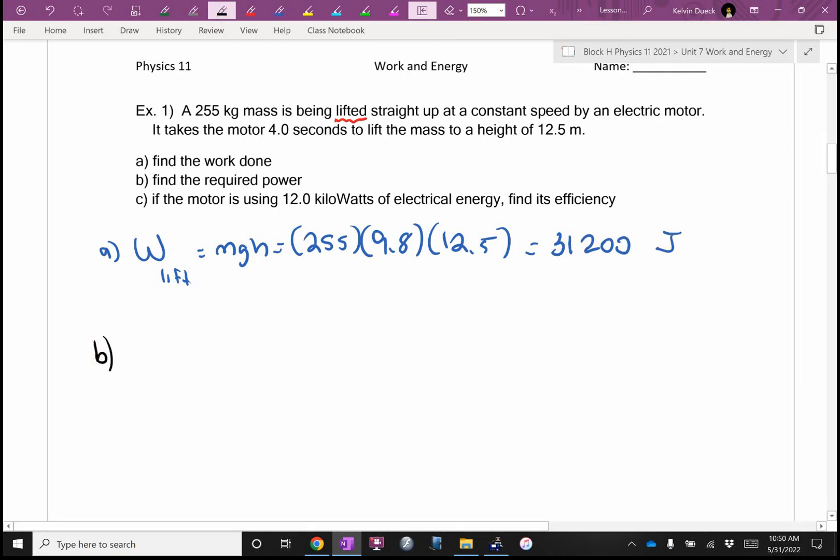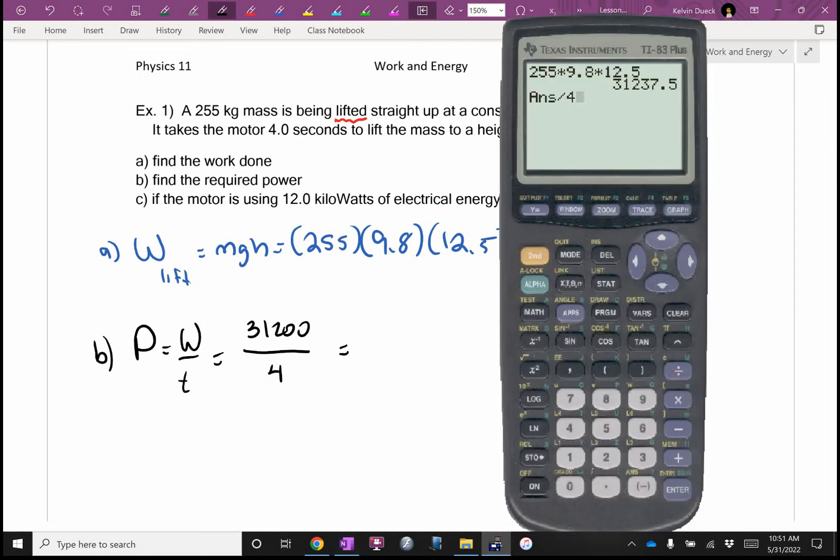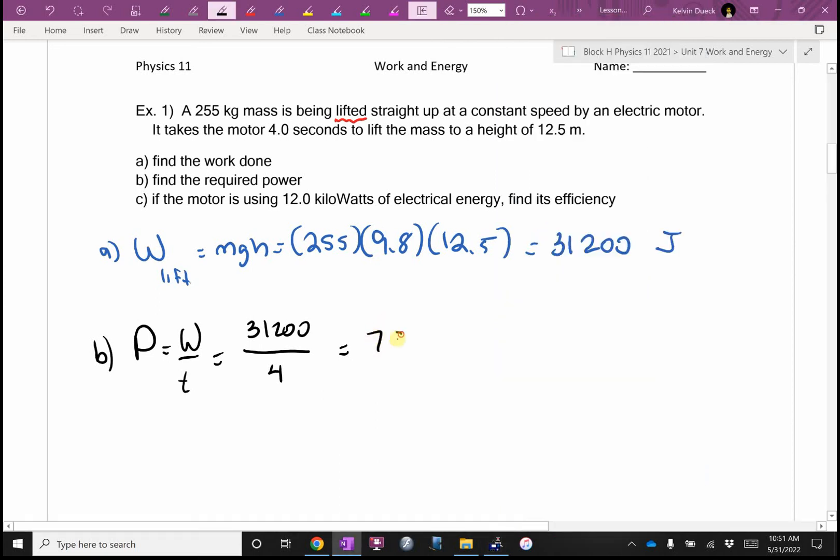B. What does B want me to find? Power. What's my equation for power on my formula sheet, which you have in front of you by now? Our symbol for power was capital P. Work over time. How much work? I'm going to write 31,200, but you know I'm using my answer button on my calculator. How much time goes by in the question? Answer button divided by four. How many watts is this motor? I get 7,809. I'll call it 7,810, but I'll store this on my calculator. Power is measured in watts.